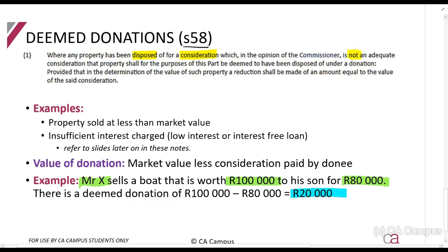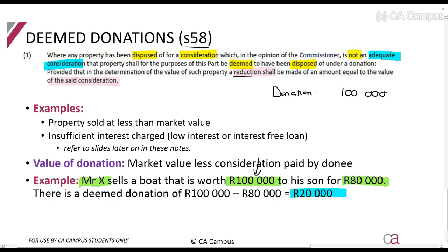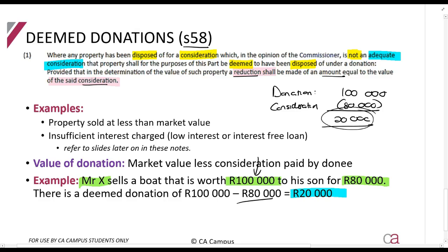Where any property has been disposed of for a consideration which in the opinion of the Commissioner is not an adequate consideration — so if it's less than market value — that property shall be deemed to have been disposed of under a donation. In determining the value of such property, a reduction shall be made for an amount equal to the value of the consideration paid. So the donation amount is R100,000 less the R80,000 consideration paid, giving R20,000 as the deemed donation. That is what this section tells us.